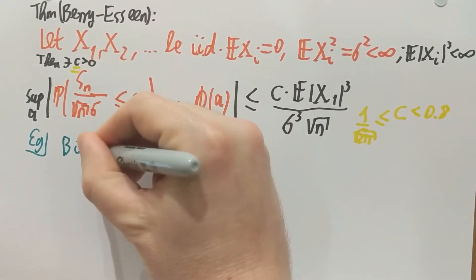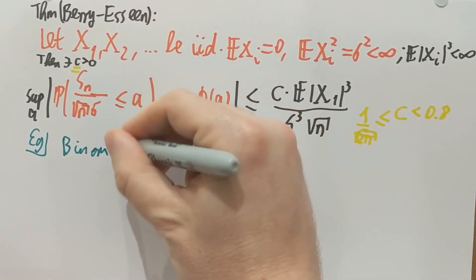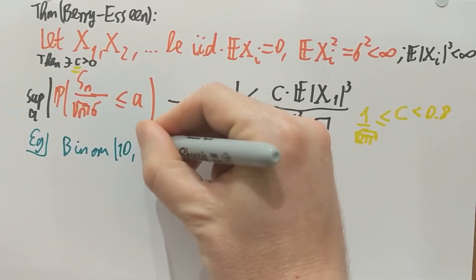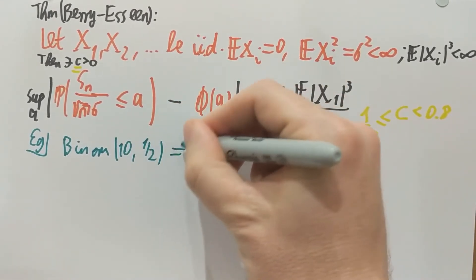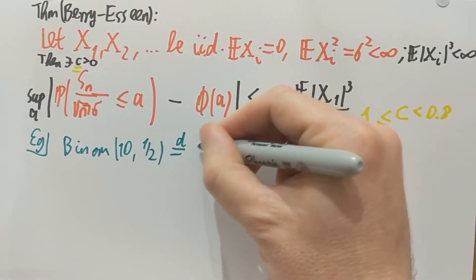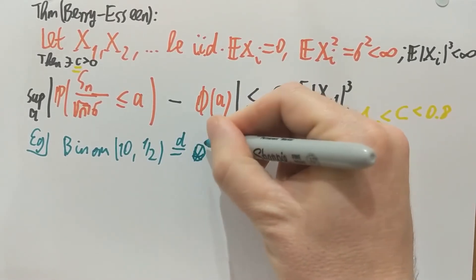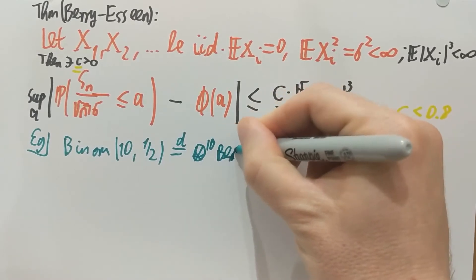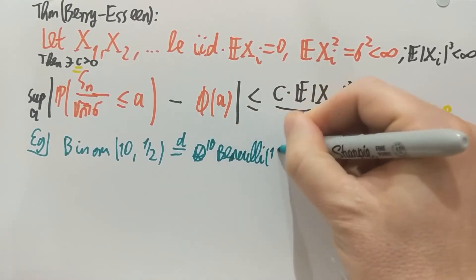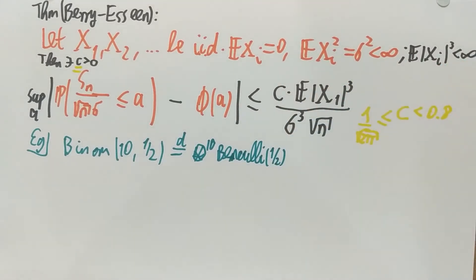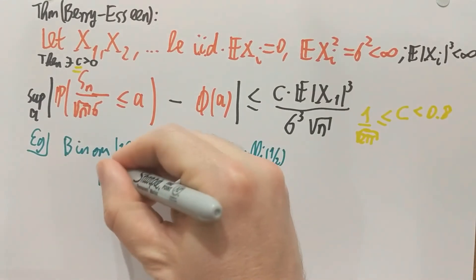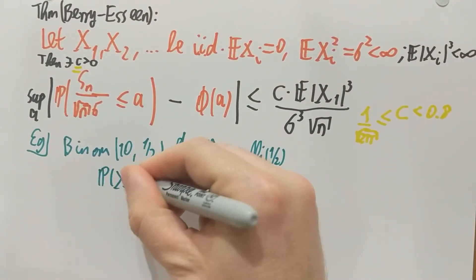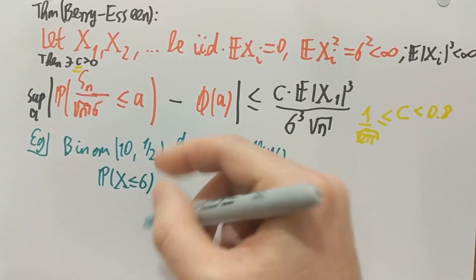So let me show you a simple example that everybody can easily do. Take a binomial random variable of parameters 10 and half. And of course, everybody knows that this is the same as the tenfold convolution of Bernoulli one half, which is just a fancy way of saying that if I take 10 independent Bernoullis of parameter one half each, then the sum has this binomial distribution.